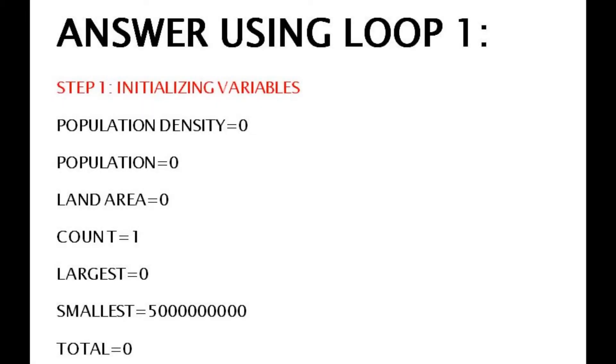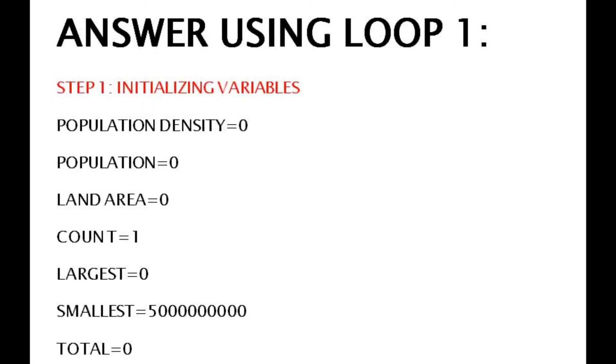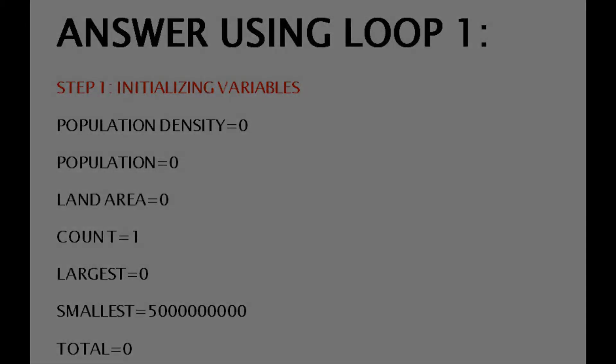Here is the answer using loop 1, which is the for-to-next loop. Step 1 is initializing the variables. The variables I used are population density equals 0, population equals 0, land area equals 0, count equals 1, largest equals 0, smallest equals 5 billion, because it needs to be a number over any population could be, and total equals 0.